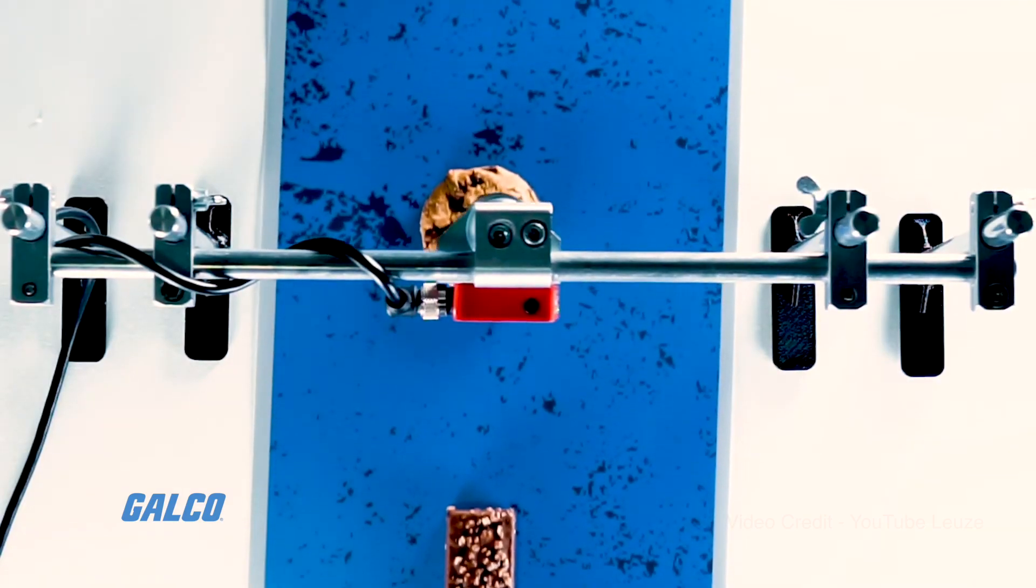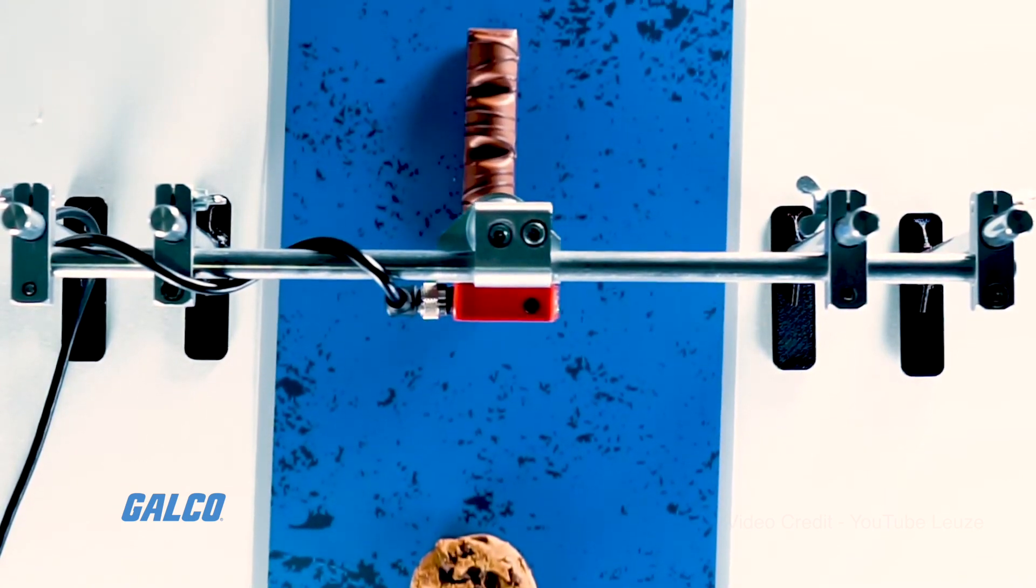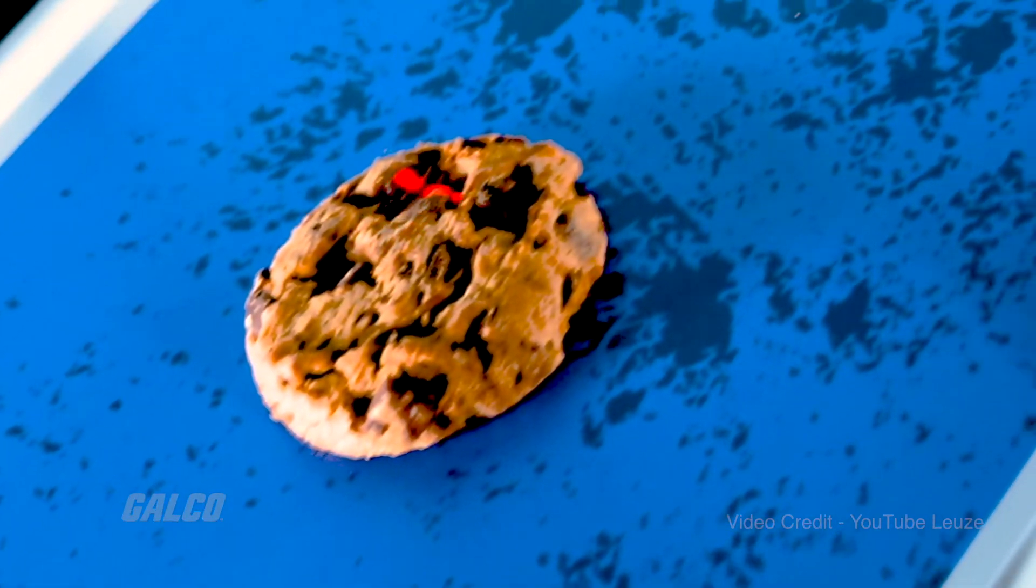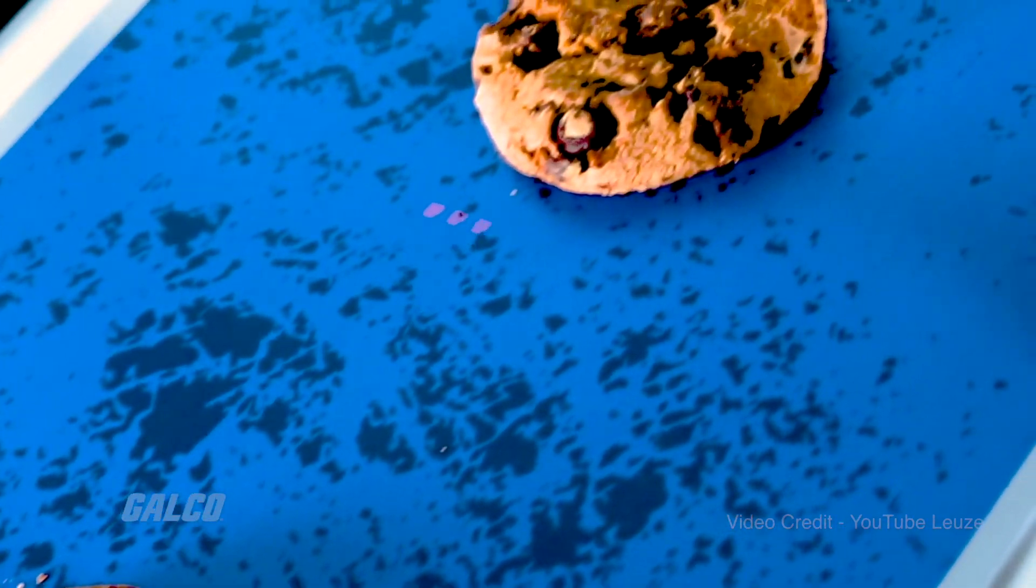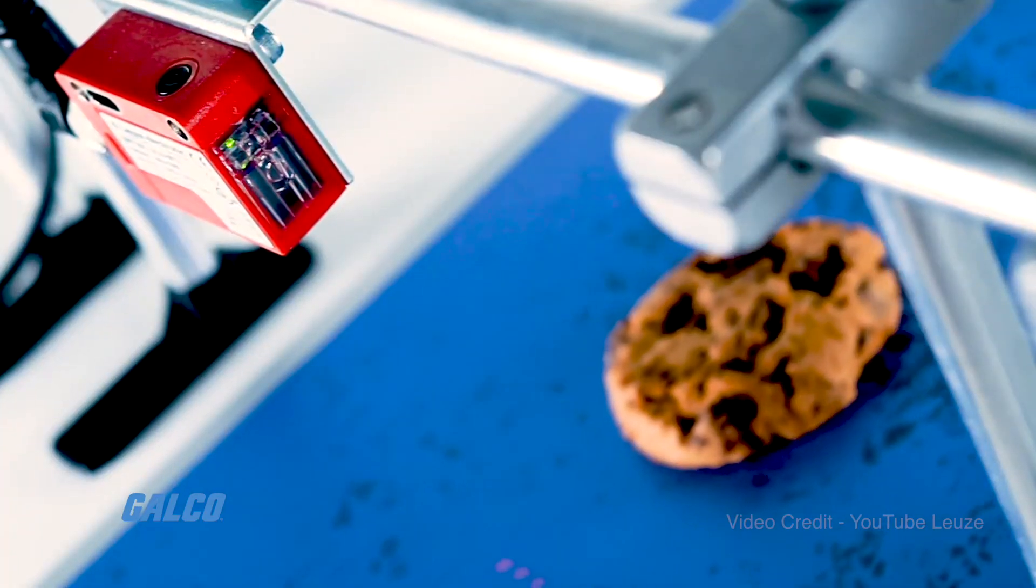The CAT technology uses the conveyor belt as a reference instead of the product. This is how the sensor detects any type of object as a deviation to the conveyor belt surface.